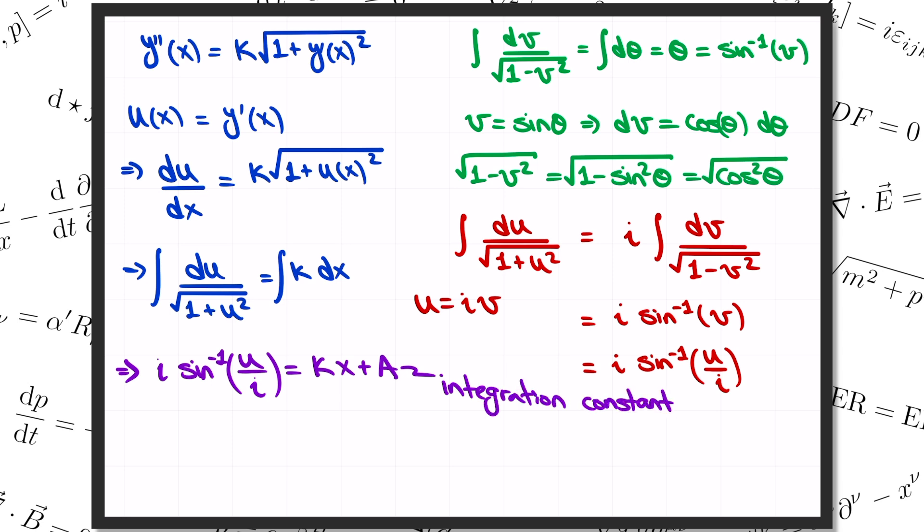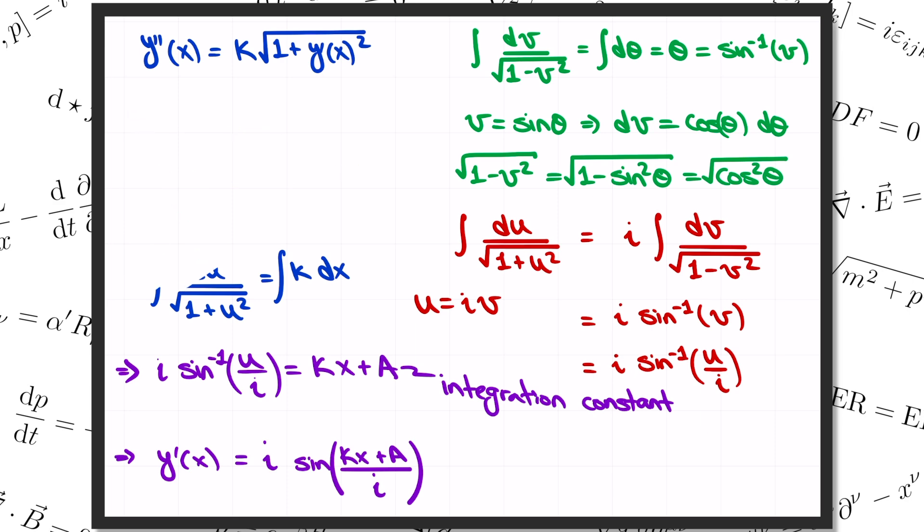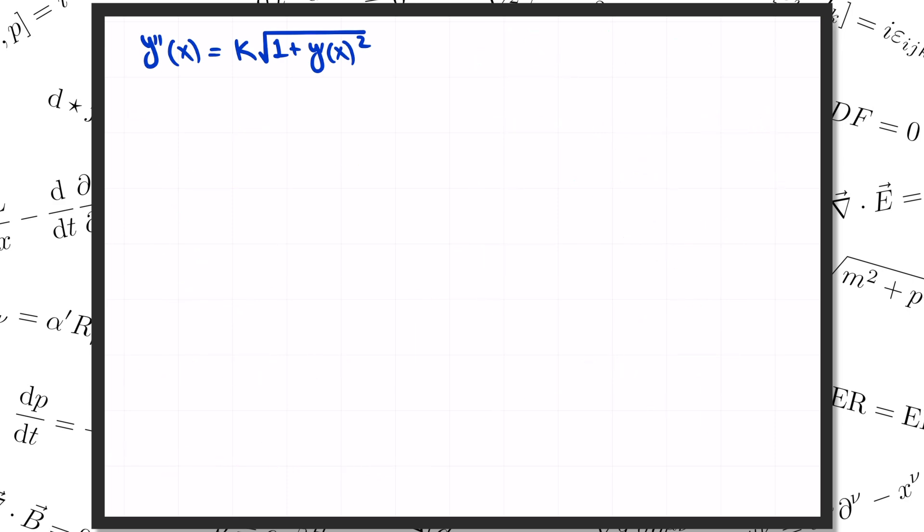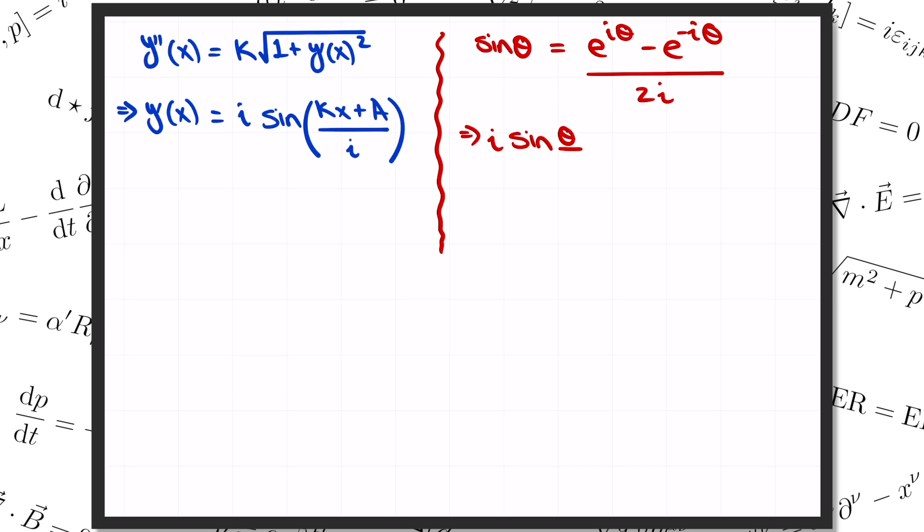Now if we solve for u equals y prime, we get y prime of x equals kappa x plus a divided by i, I take the sine of that, and then multiply the whole thing by i. Now don't worry, the shape of the rope is obviously not going to turn out to be imaginary, and so those factors of i have got to disappear. But how's that going to work? Well, you might know that the sine function can be expressed in terms of exponentials as sine of theta equals e to the i theta minus e to the minus i theta divided by 2i. Which in turn means that if I take i times the sine of theta over i, all the i's cancel out, and I get e to the theta minus e to the minus theta divided by 2.